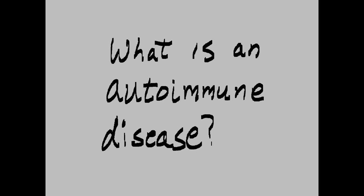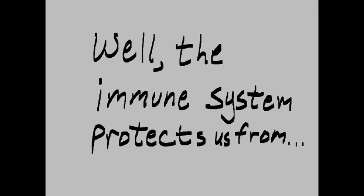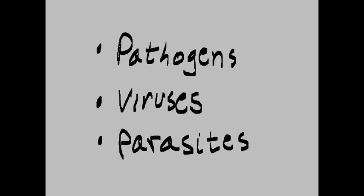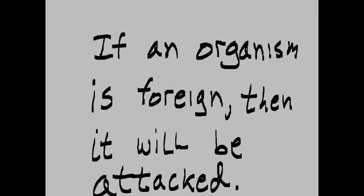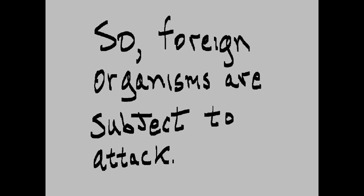What is an autoimmune disease? The immune system protects us from pathogens, viruses, and parasites. As soon as a pathogen is identified, it will be attacked by our body's defense system. If an organism is foreign, then it will be attacked. Foreign organisms are subject to attack.